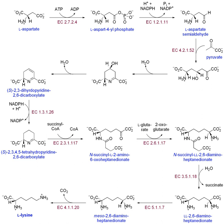Like phospholipids, sphingolipids have a polar head and nonpolar tails. Unlike phospholipids, sphingolipids have a sphingosine backbone. They exist in eukaryotic cells and are particularly abundant in the central nervous system — for example, sphingomyelin is part of the myelin sheath of nerve fibers. Sphingolipids are formed from ceramides consisting of a fatty acid chain attached to the amino group of a sphingosine backbone. During sphingosine synthesis, palmitoyl-CoA and serine undergo a condensation reaction forming dehydrosphingosine, which is reduced to dihydrosphingosine, then converted to sphingosine via oxidation by FAD.